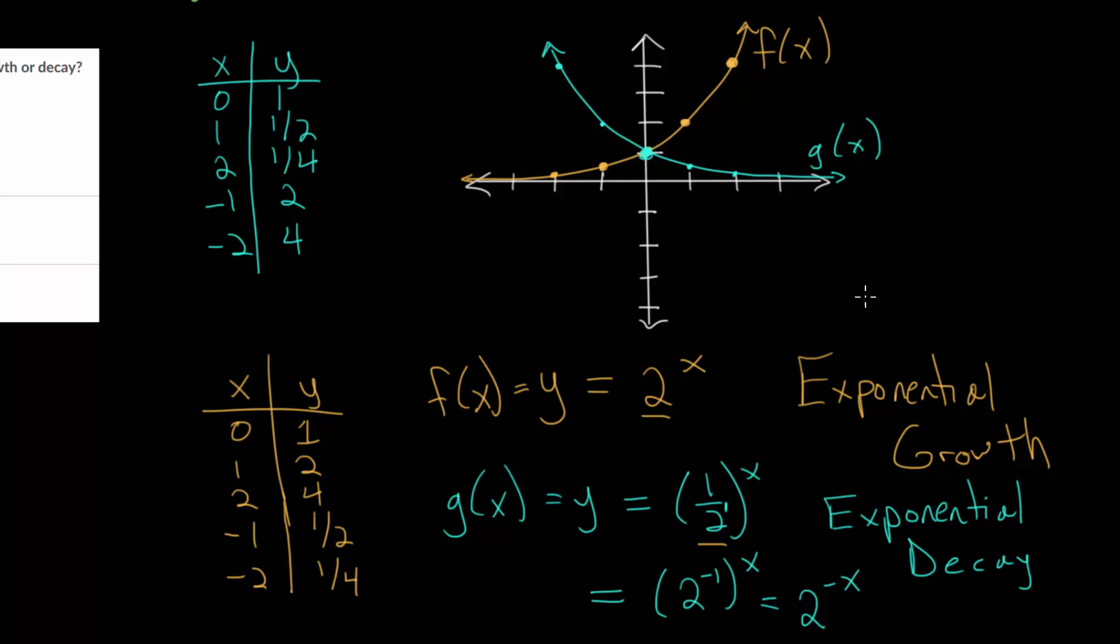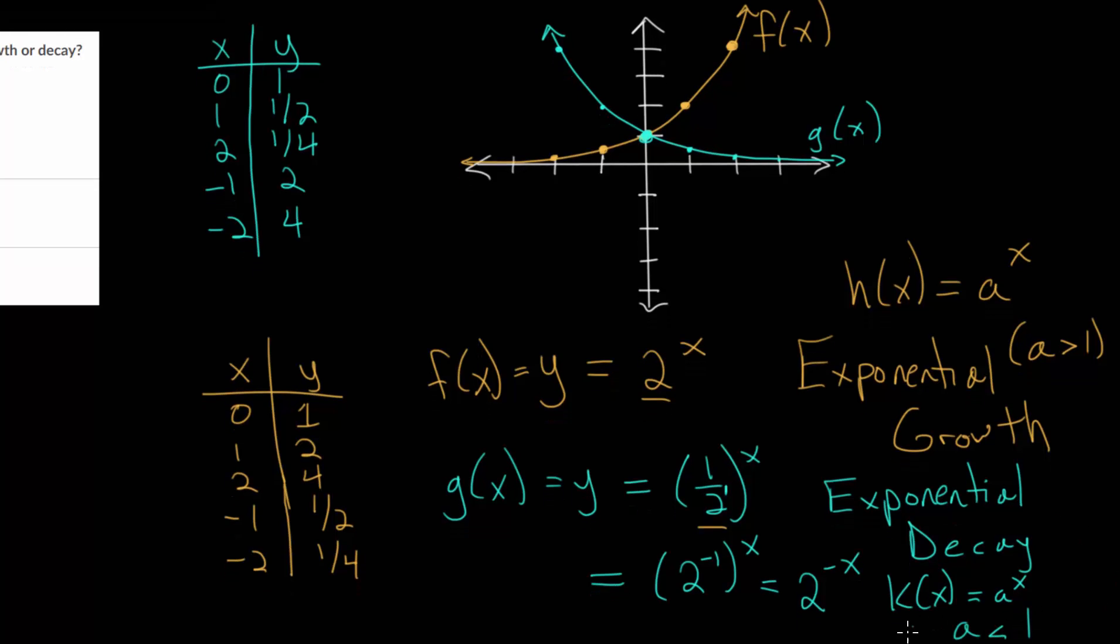So we can write that when you have some function, we'll call it h of x, h of x is a to the x power. For growth, a is going to be bigger than 1. And for decay, let's say we have k of x is a to the x. Then in this case, a is going to have to be a fraction. It will be between 0 and 1. So when we go back and look at our example problems, we're basically just going to be looking at the base. Is the base going to be a fraction, or will it be a number greater than 1? Or another way to look at it is as the x values increase, is your function value getting smaller, which is decay, or is it getting larger, which is growth? So with all this in mind, let's now look at some example problems.